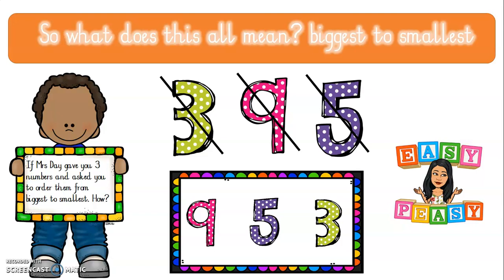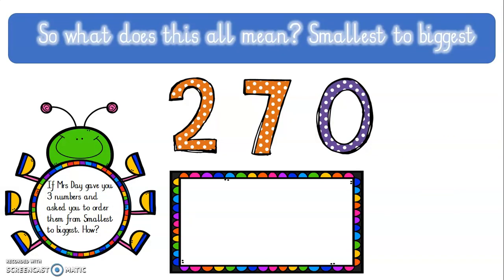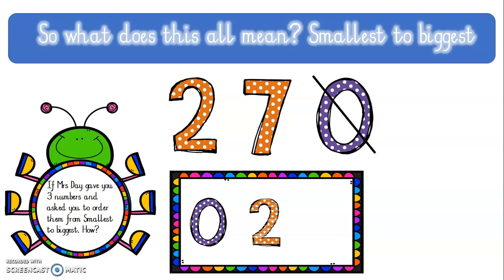Let's try the next step — smallest to biggest. If Mrs. Day gave you 3 numbers and asked you to order them from the smallest number to the biggest number, how would we do that? Here we have the numbers 2, 7, and 0. What is the smallest number? Correct — 0. We scratch out 0 so that we remember we've already used it. The next smallest number is 2. Don't forget to scratch it out. And the last number would be 7.